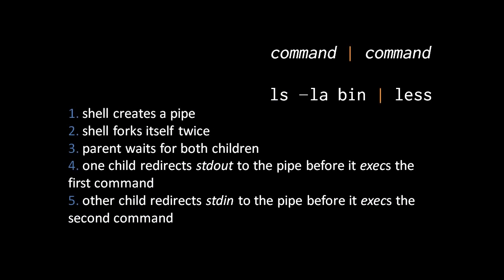The shell first creates a pipe to connect the two processes, then forks itself twice. The parent shell process waits for both children to complete. In one child process, it redirects its standard output to the newly created pipe before executing the first command. Meanwhile, the other child process redirects its standard input to the pipe before executing the second command. These two commands execute in parallel as separate processes, and the original shell waits for both to terminate.